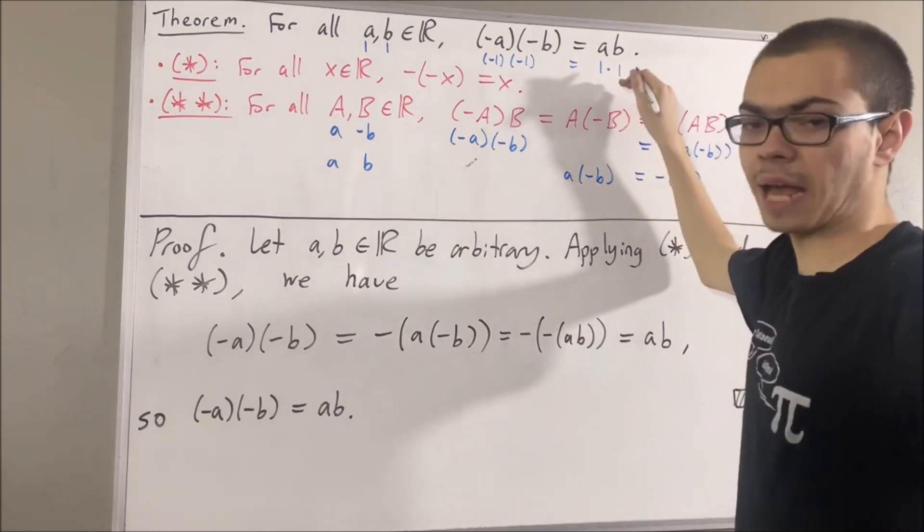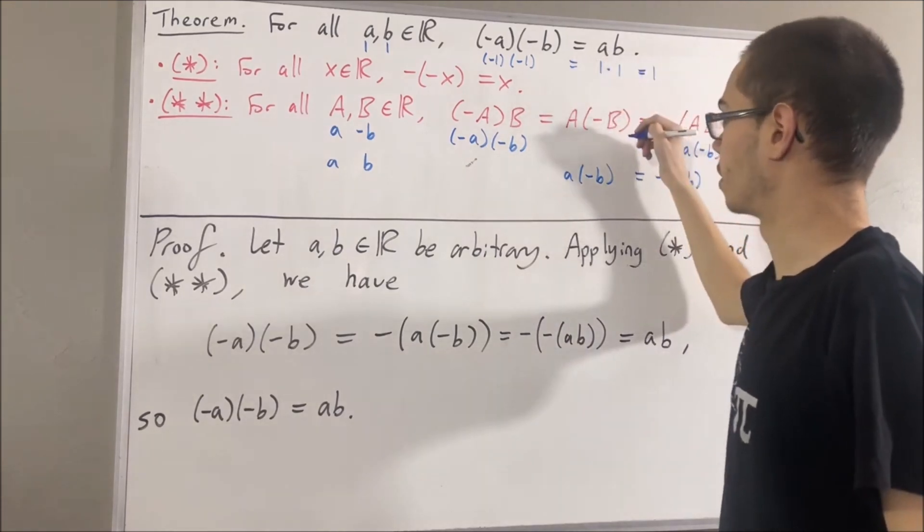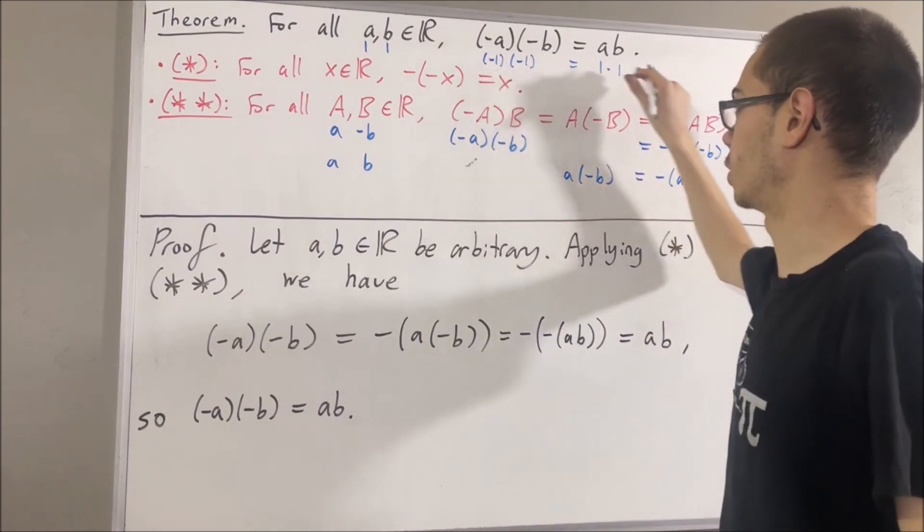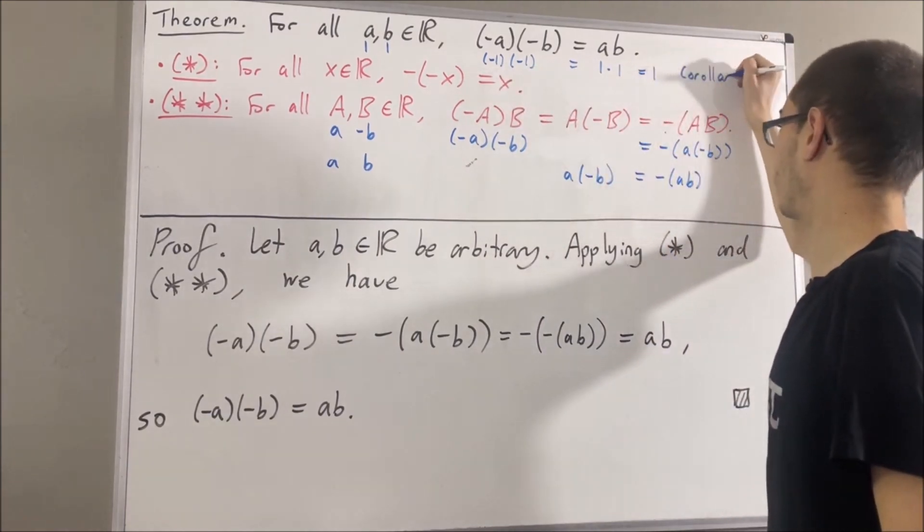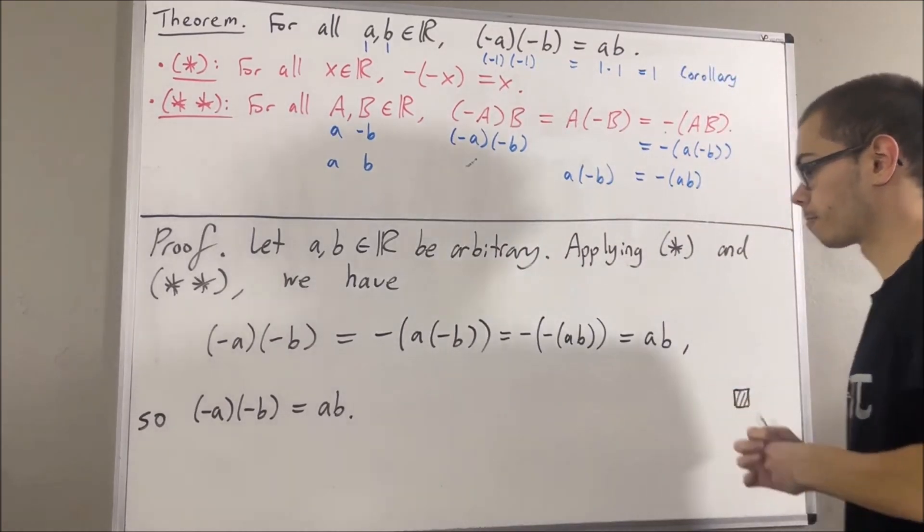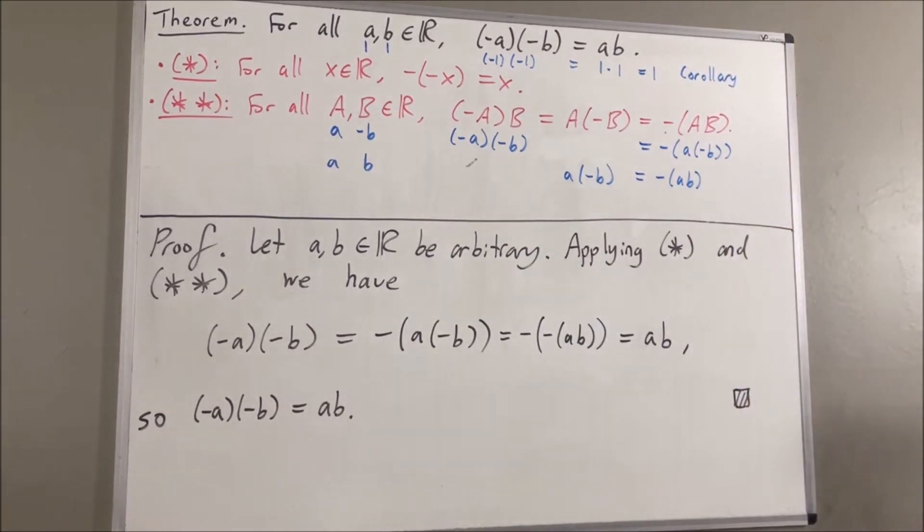And by axiom 6, 1 times 1 is equal to 1. So, we have negative 1 times negative 1 equal to 1. Right? This is a corollary of this theorem. And so, yeah, that's pretty much it for this video.